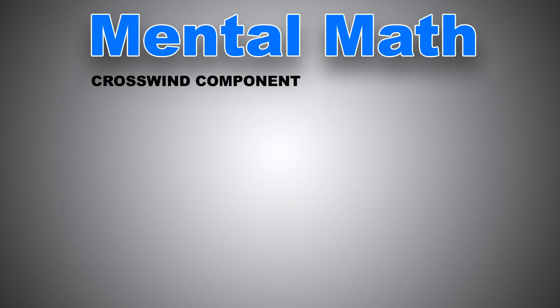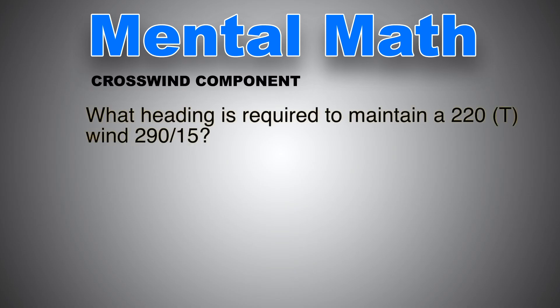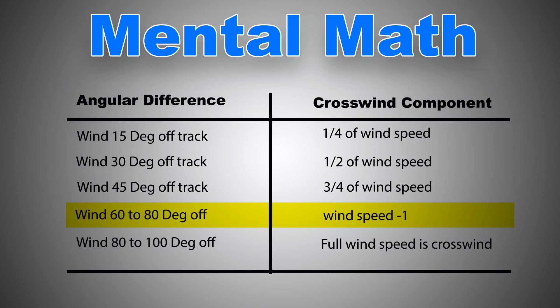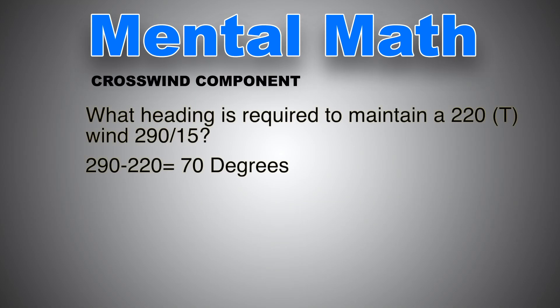Let's do one more example. What heading is required in order to maintain 220 true track if the wind is 290 at 15? Again, the angular difference between 290 and 220 is 70. The wind is 70 degrees off. According to the table, if the wind is between 60 and 80 degrees off, the crosswind component is the wind speed minus 1. In this case, the wind speed is 15. So minus 1 is 14 knots crosswind.